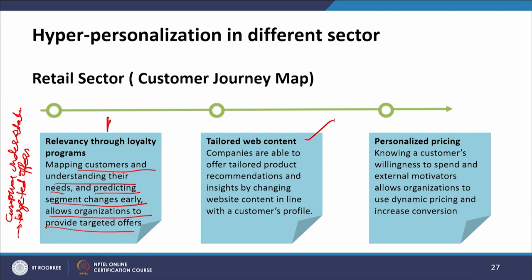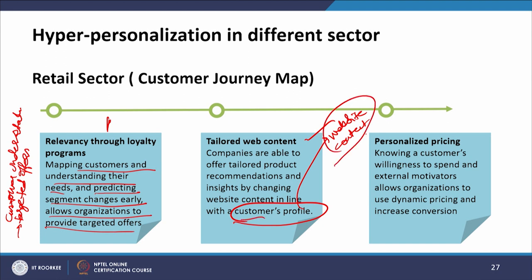The next step in the retail journey is tailored web content. Companies are able to offer tailored product recommendations and insights by changing website content in line with a customer's profile — it may be that each customer is looking at different content on the same website. The next step is personalized pricing: knowing a customer's willingness to spend and external motivators allows organizations to use dynamic pricing and increase the conversion rate.